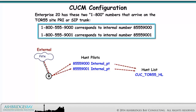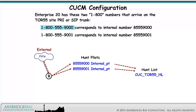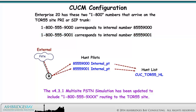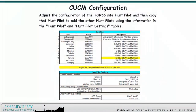Enterprise 20 has two 1-800 numbers that arrive on the Toronto 55 site PRI or SIP trunk: 1-800-555-9000 corresponding to internal number 855-9000. The version 4.3.1 multi-site PSTN simulation has been updated to include 1-800 routing to the Toronto 55 site. Adjust the configuration of the Toronto 55 site hunt pilot and then copy that hunt pilot to add the other hunt pilots using the information in the hunt pilot and hunt pilot settings tables.